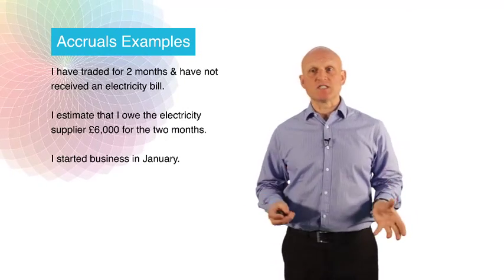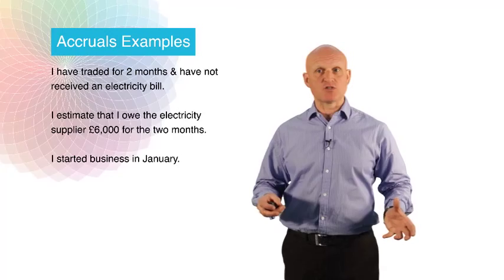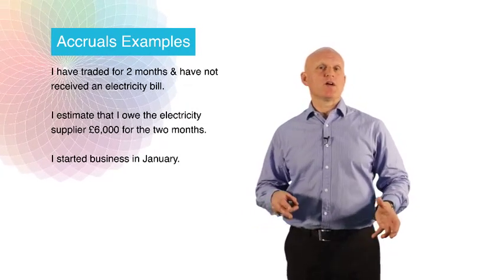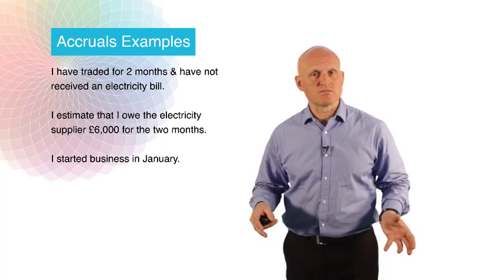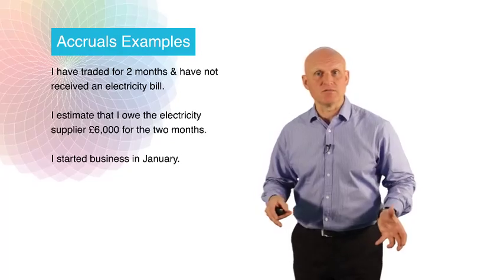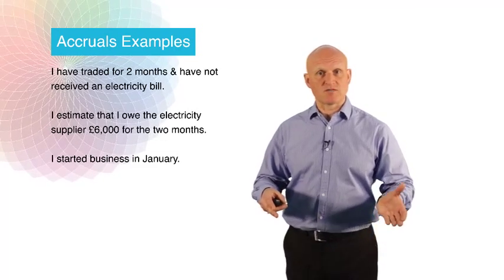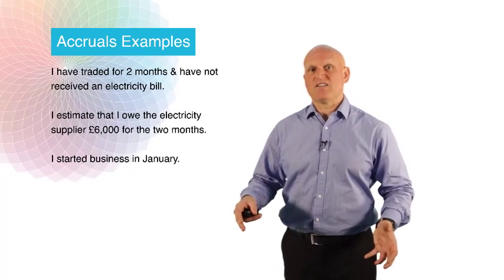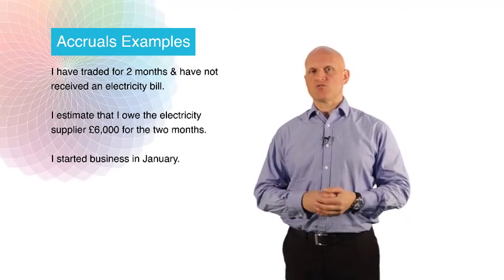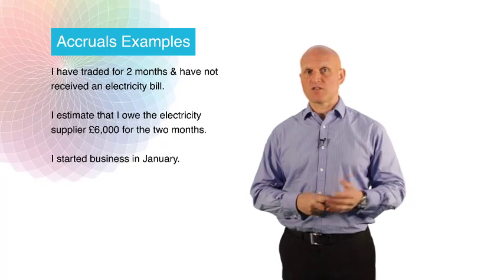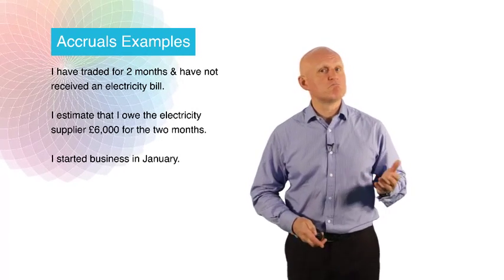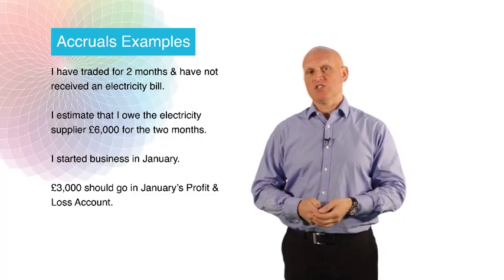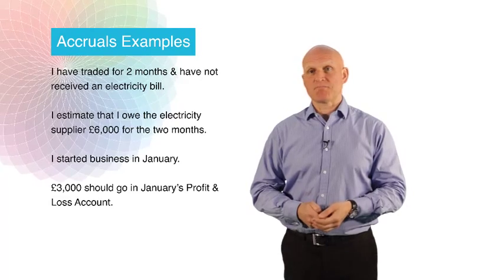Another example. Let's say I've been in business for two months and I haven't yet received an electricity bill. And I've estimated, because I've had a look at my meter, that I owe about £6,000 for the two months. And let's say I started business in January. I started in January, I've gone through January, February, I think I owe about £6,000 for the two months. I haven't guessed, it's about £6,000. How much would go in January's profit and loss account as an electricity expense? Have a think. If you're thinking £3,000, then that's correct. We would make an accrual of £3,000 in January's profit and loss account.